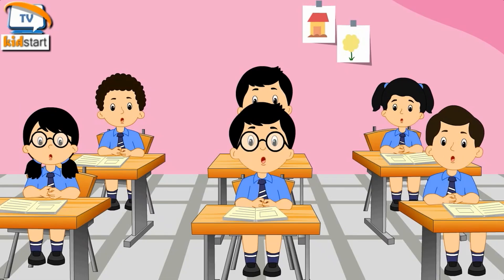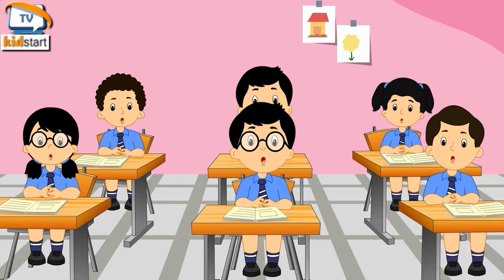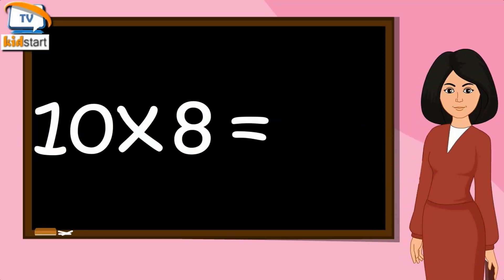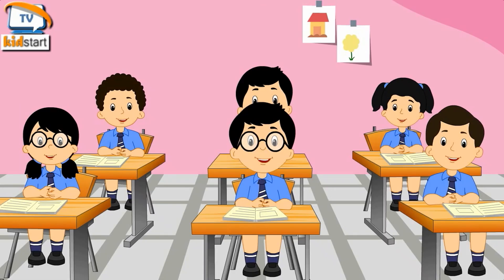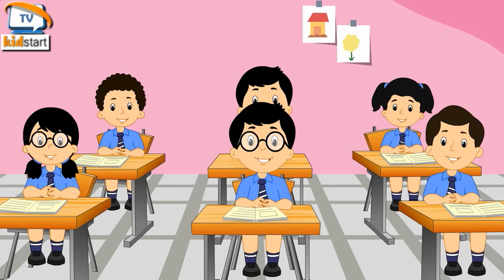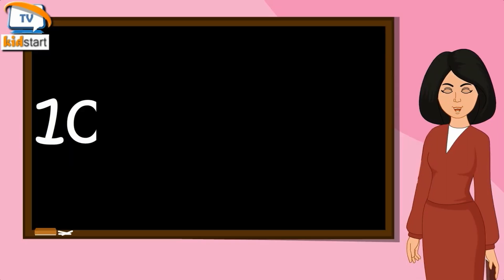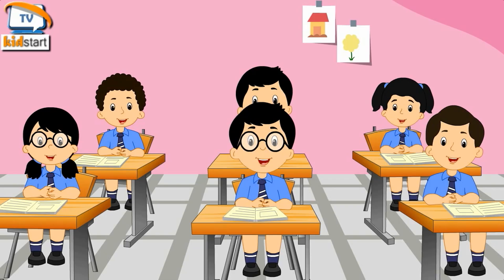10 sixes are 60, 10 sevens are 70, 10 eights are 80, 10 nines are 90, 10 tens are 100.